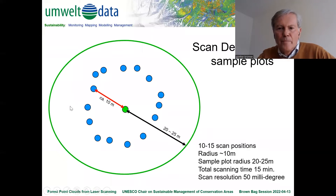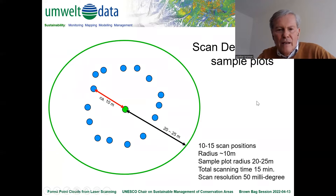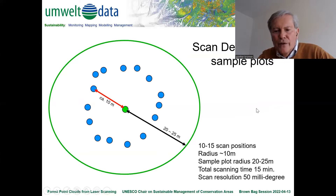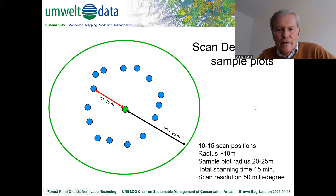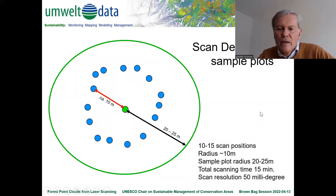Looking at the sample design in the forest: with approximately 10 to 15 scan positions, you can capture a sample plot radius of 20 to 25 meters, depending on the density of the forest. The scanner is quite fast, so the total scanning time is just 15 minutes for such a sample plot.